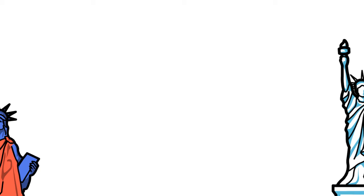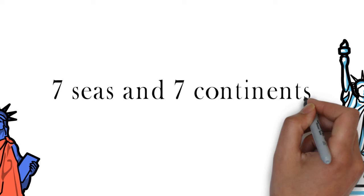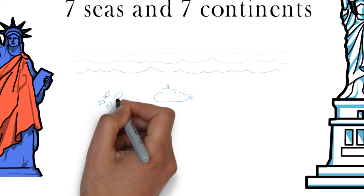The seven spikes represent the seven seas and seven continents of the world, as per the National Park Service website and the Statue of Liberty Club. Thank you.